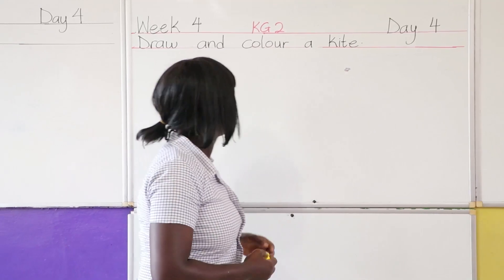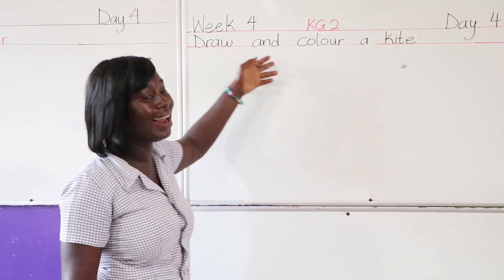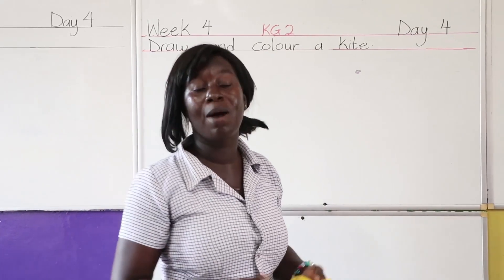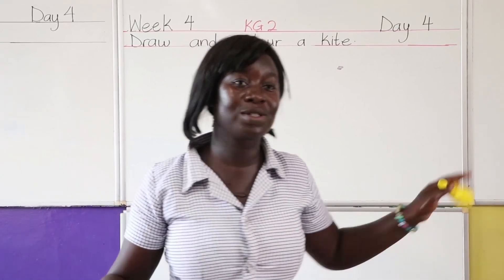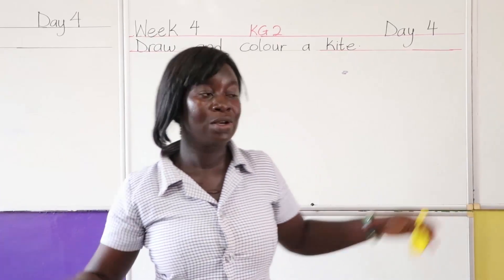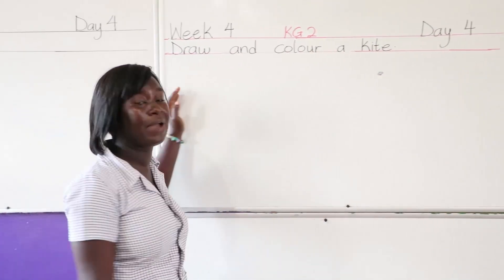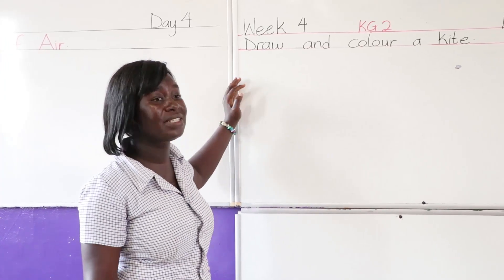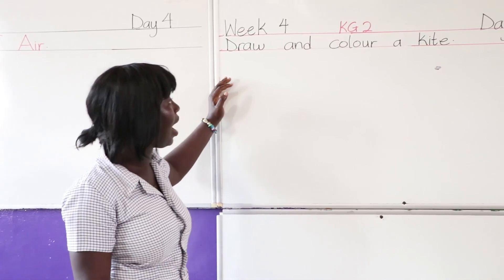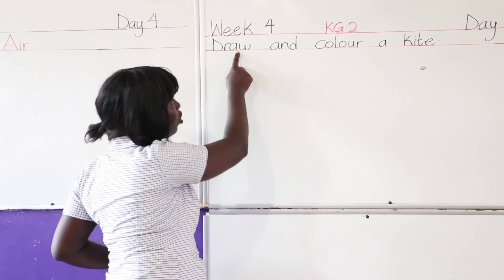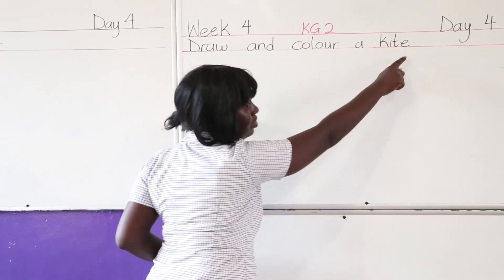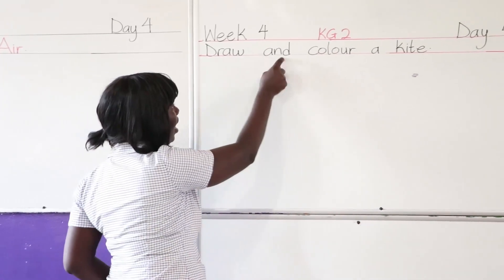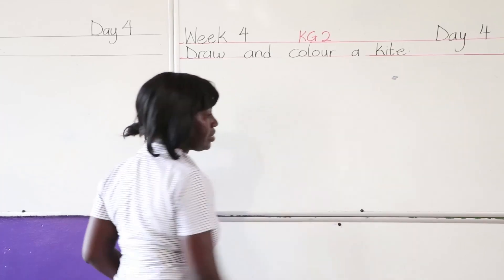Now this afternoon, we are going to draw and color a kite. And we know that without the help of air, our kites cannot fly in the sky. So there is a simple assignment we are going to do whilst we are at home: take your pretty book, classwork exercise book, and write your instructions — draw and color a kite. Very simple.